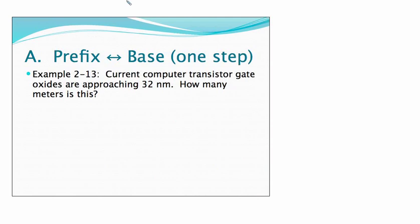Now let's work a couple of one-step problems with this. In a one-step, we're just going to go back and forth from a prefix to a base. So we have 32 nanometers—32 nanometers is equal to how many meters? That's a very small value. We're not used to seeing numbers that small, but that's a number frequently used in the semiconductor industry.